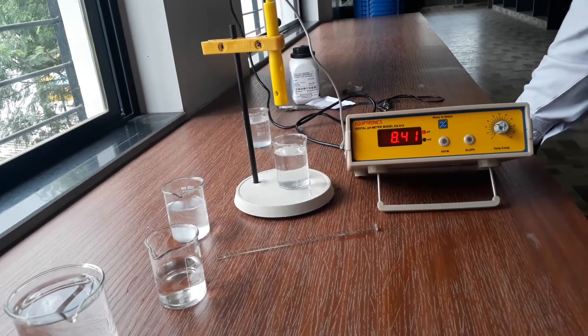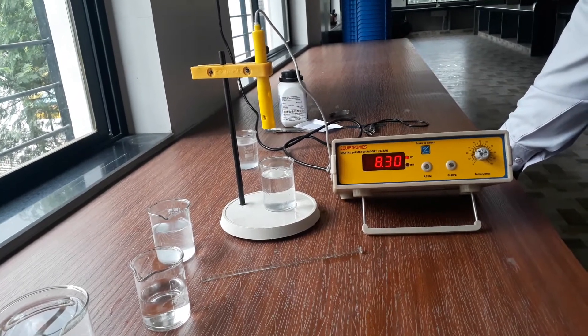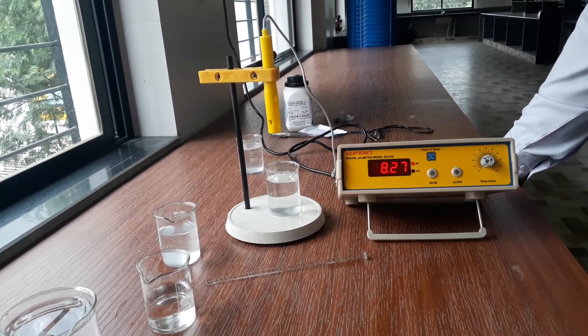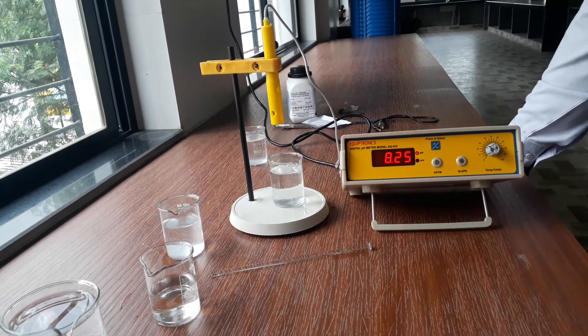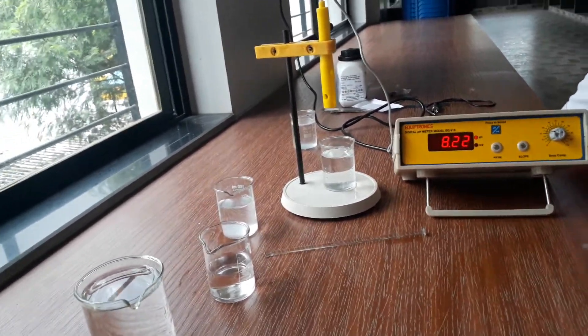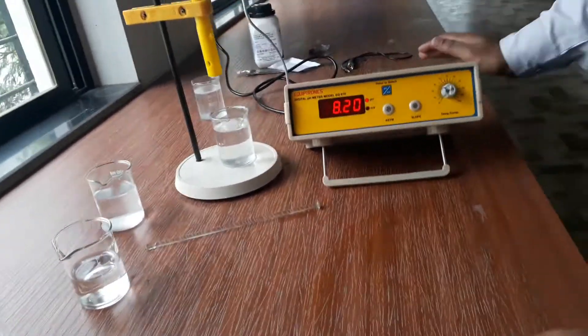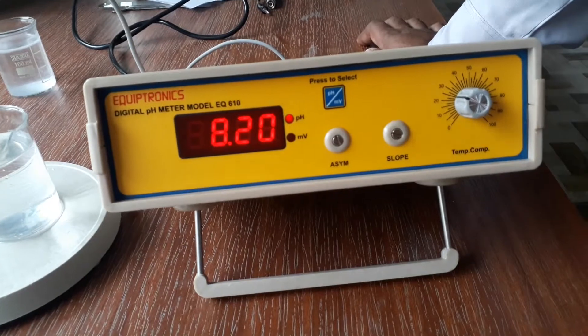Hello students, today we are going to learn an activity. This is just an activity you had, you don't have to write this in your journal. So we are going to study about pH meter. pH you already know, power of hydrogen or potential of hydrogen. So this is a pH meter which is the most accurate technique for measuring pH values of any solution.